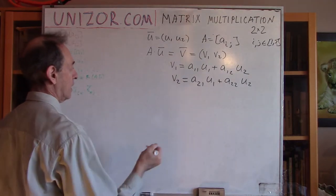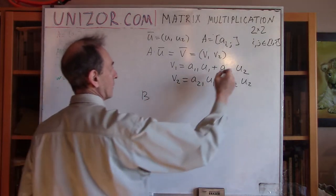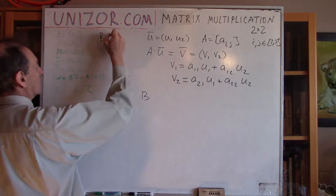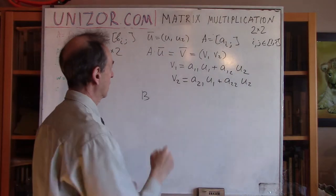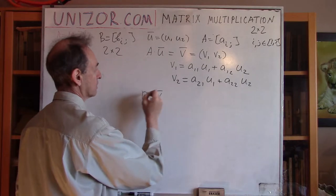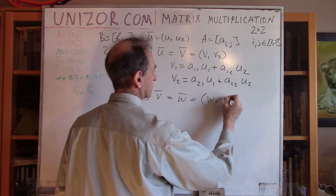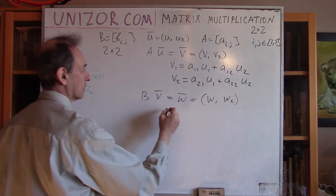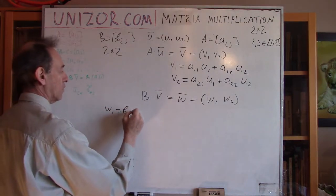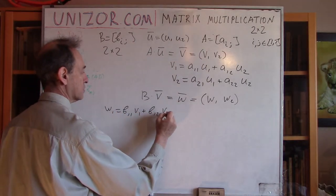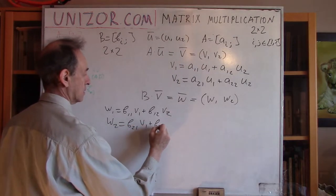Next, we have the matrix B, also a two-by-two matrix with elements B_ij. I apply this matrix to vector V to get vector W. W1 = B_11·V1 + B_12·V2, and W2 = B_21·V1 + B_22·V2.